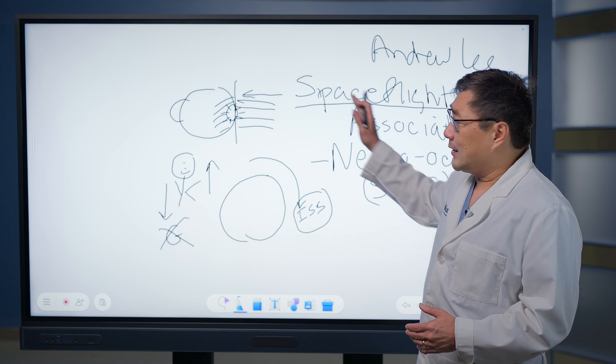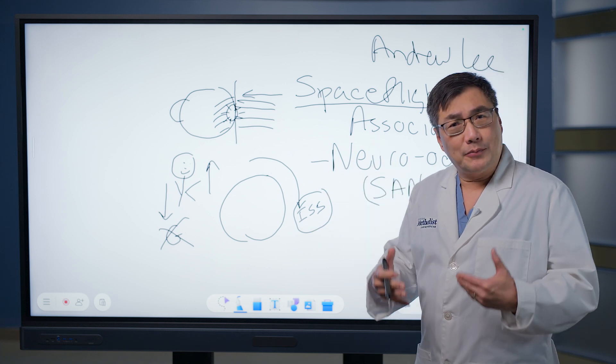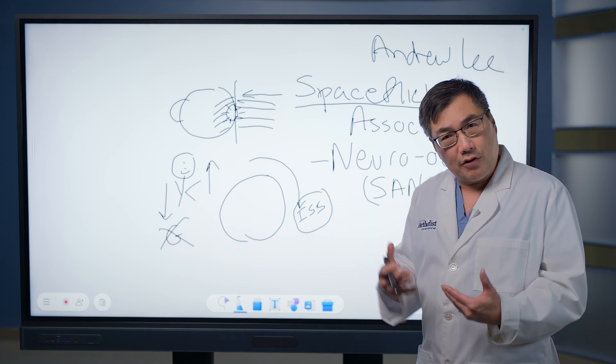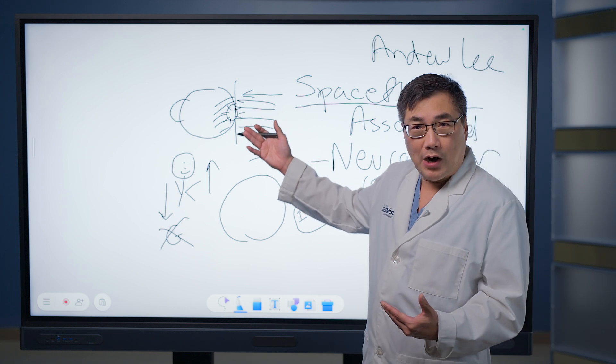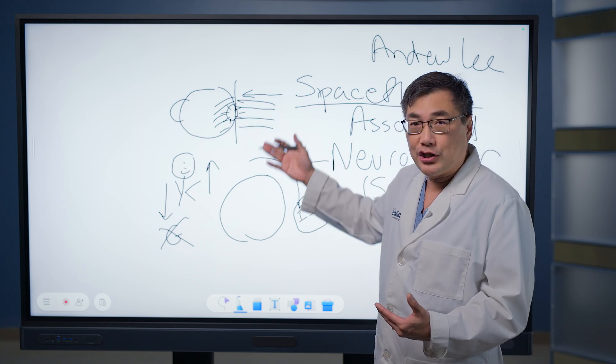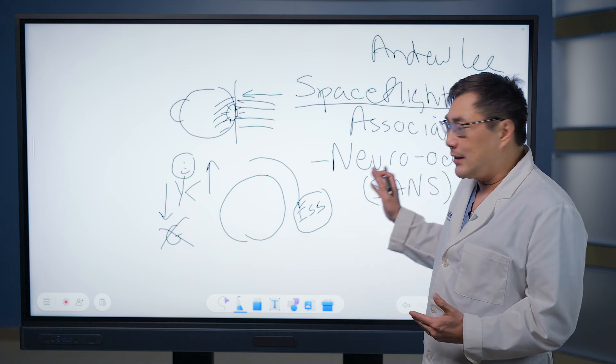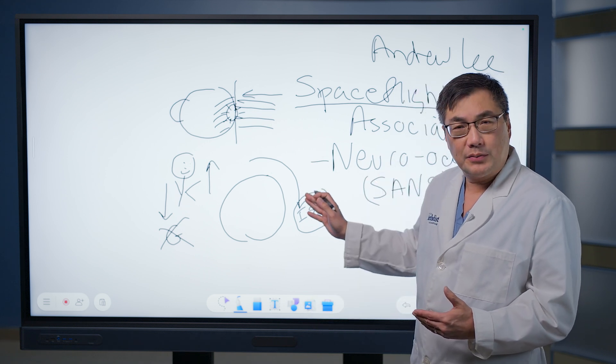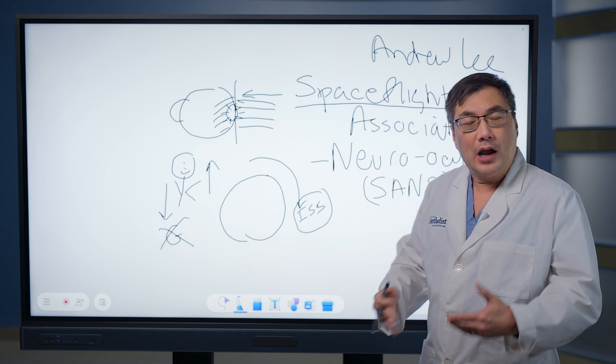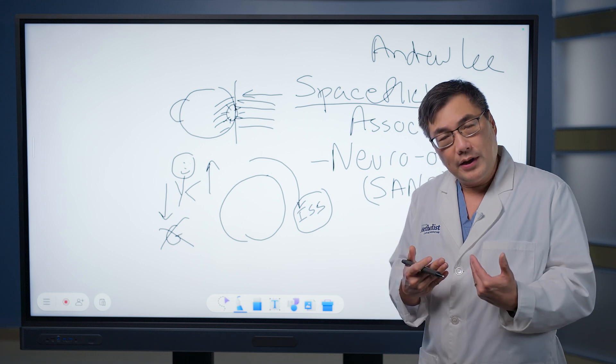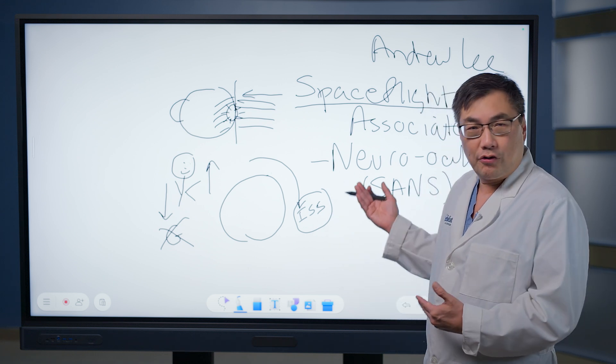Studying SANS, of course, is going to have some terrestrial applications. Here on Earth, we see the same kinds of problems - fluid accumulation, swelling of the eye nerve, and these folds in the choroid. Understanding the underlying pathogenesis of spaceflight-associated neuroocular syndrome obviously has importance to us here on Earth and for neuroophthalmology patients.